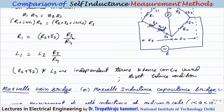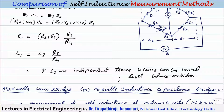To get the balance easily, we select independent terms. Since R3/R4 appears in both equations, and R2 and L2 do not appear together, in practice R2 and L2 are taken as independent terms and varied to get the balance.